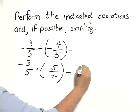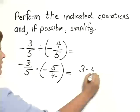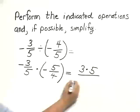Multiplying in the numerator, we have three times five. And multiplying in the denominator, we have five times four.